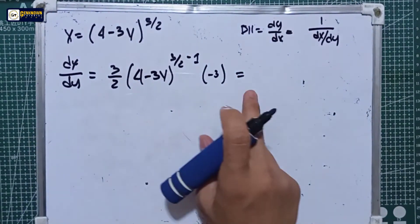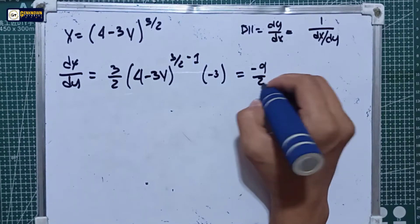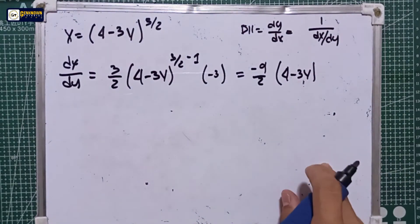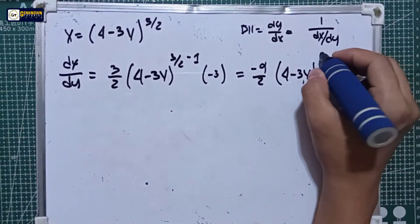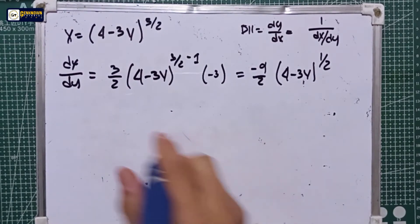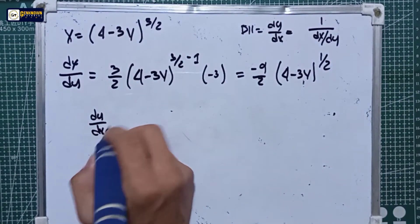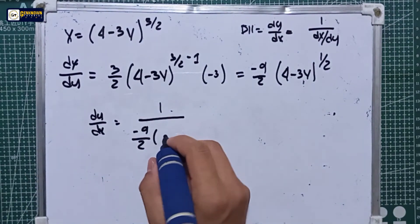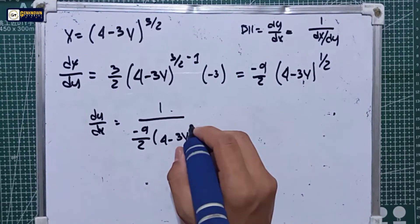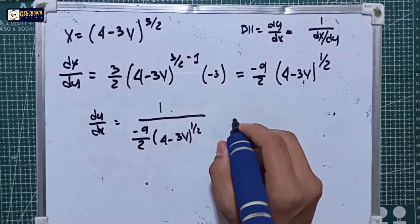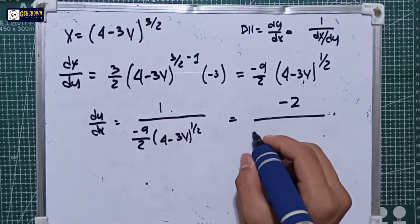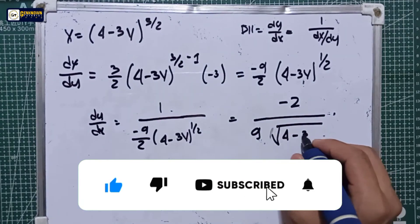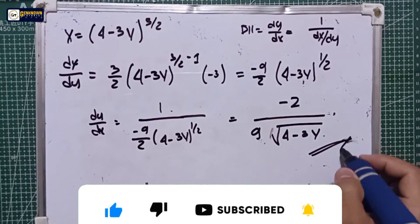So dx over dy equals negative 3 multiplied by 3 over 2, giving negative 9 over 2, multiplied by (4 minus 3y) raised to 1/2 — since 3/2 minus 1 equals 1/2. Applying the inverse function rule, dy over dx equals 1 over dx over dy, which equals 1 over (negative 9/2 times (4 minus 3y) to the 1/2). This simplifies to negative 2 over (9 times square root of (4 minus 3y)). This is the final answer.